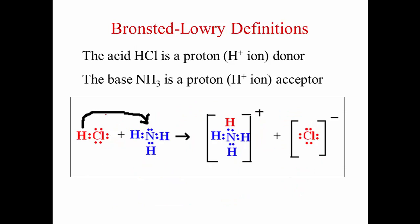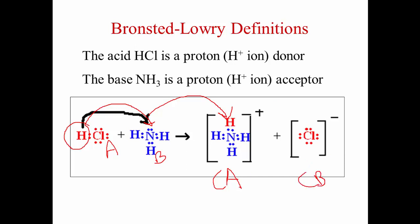Looking at another reaction: HCl acid donated a proton, forming the hydronium ion. If this is the base and this is the acid, when that base takes that proton it forms the conjugate acid, leaving the conjugate base — whatever is left from your acid. In the reverse reaction, the hydronium ion would be donating that proton back, so it would be the acid — that's why we call it the conjugate acid — and the chloride ion would be the conjugate base as it would be accepting that proton.